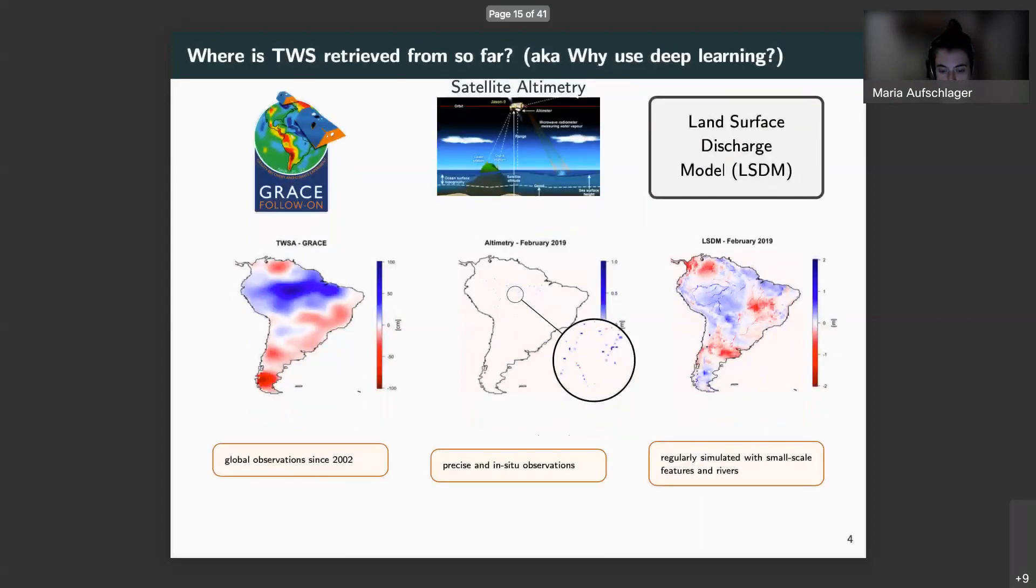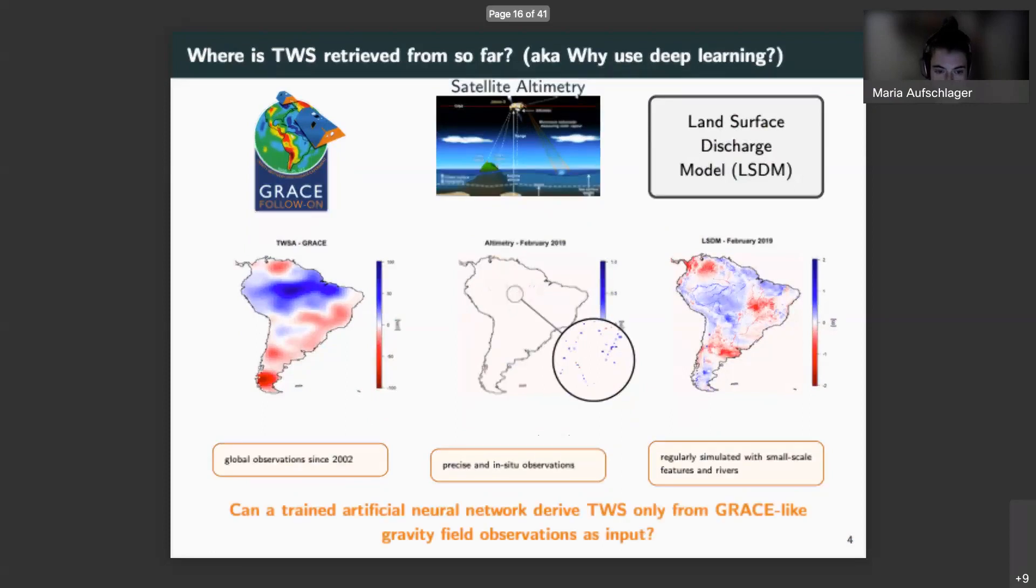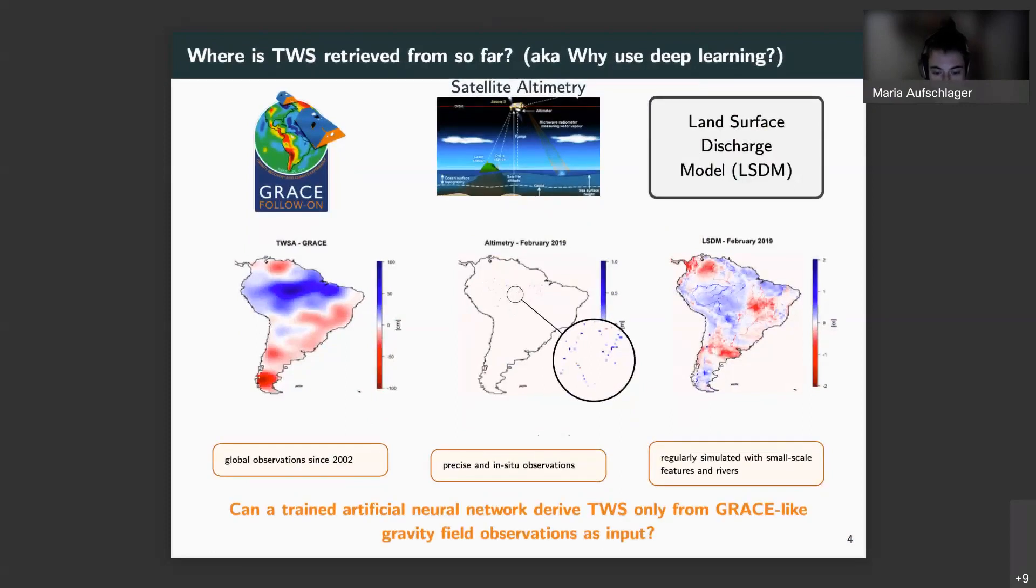My approach now is to combine the advantages of spaceborne gravity and altimetry observations with the aid of numerical modeling through the tool of deep learning. To aim for an artificial neural network that is capable of deriving terrestrial water storage anomalies just from GRACE-like observations and in a future outlook to move more and more away from the model world.